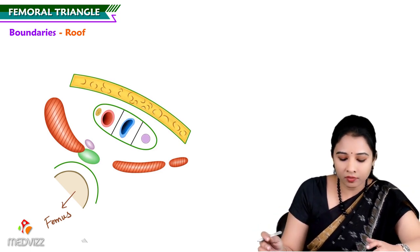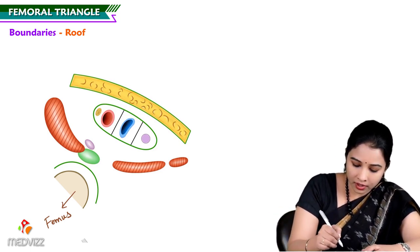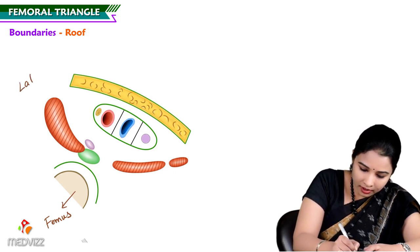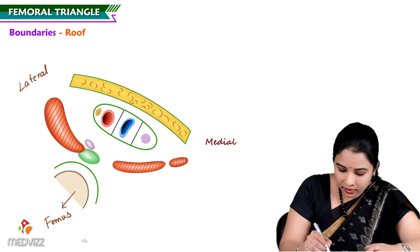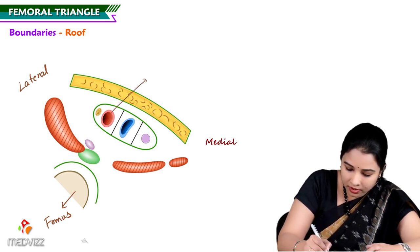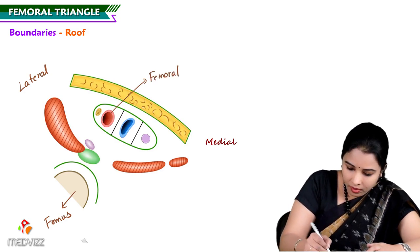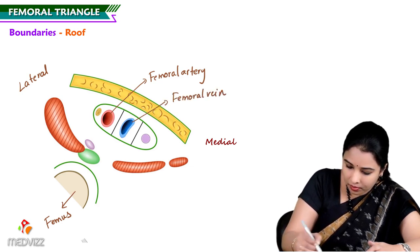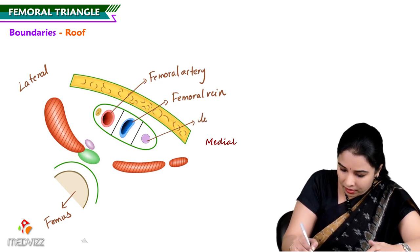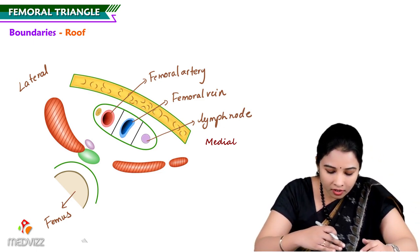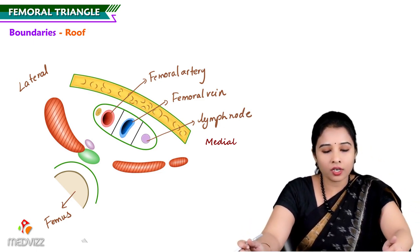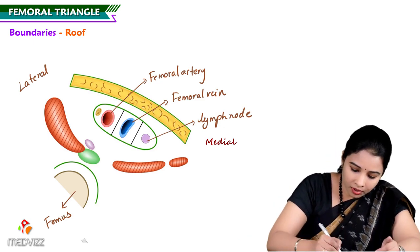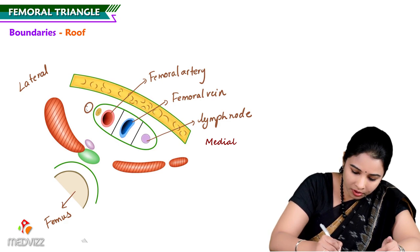Looking lateral to medial in this cut section: the lateral side contains the femoral artery, and medially we can see the femoral vein next to it. Most medially, we can see the lymph node called the femoral lymph node. The femoral artery and vein are present in a sheath called the femoral sheath, whereas the femoral nerve is present outside the femoral sheath.